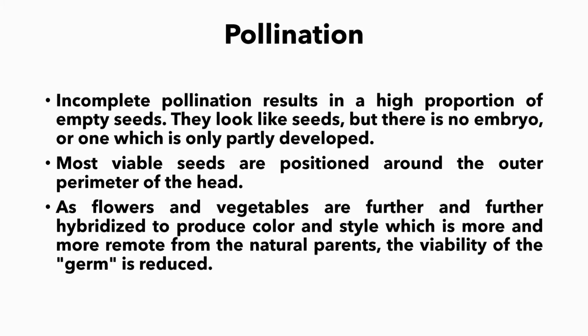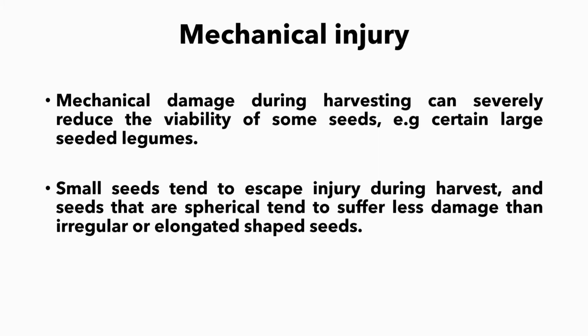If flowers and vegetables are further and further hybridized to produce color and style more and more removed from the natural parents, the viability of the germ is reduced. Mechanical injury: mechanical damage during harvesting can severely reduce the viability of some seeds — example: certain large-seeded legumes.